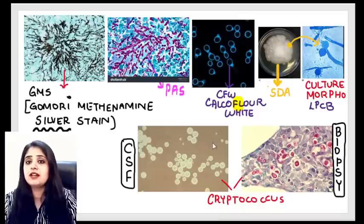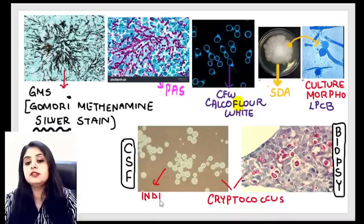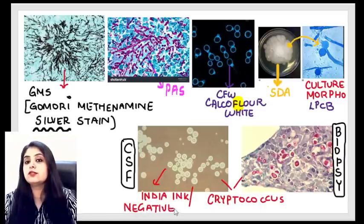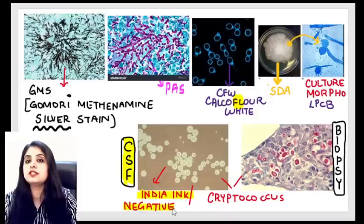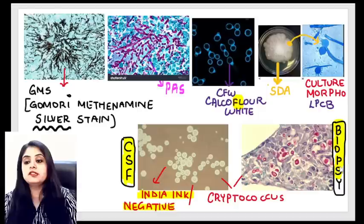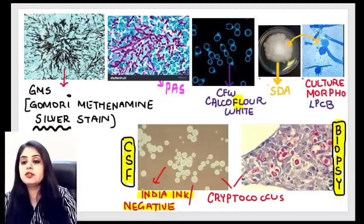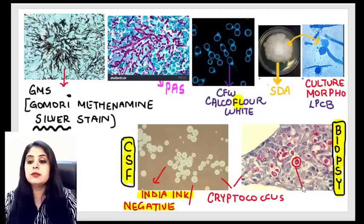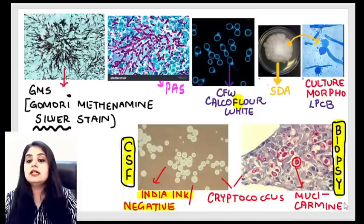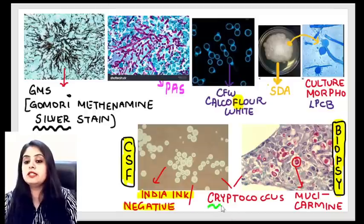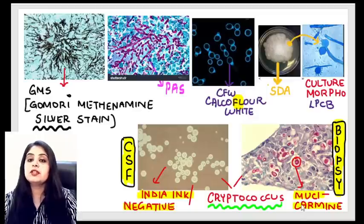For a biopsy specimen of Cryptococcus, the organism appears rose pink — because the stain used is Mucicarmine. So the two key points: for CSF use India ink, for biopsy use Mucicarmine.